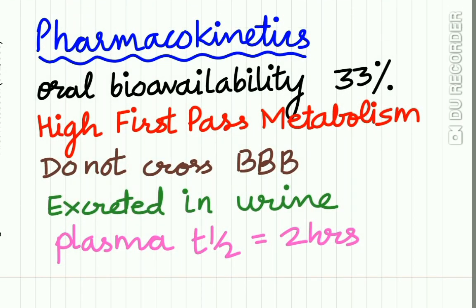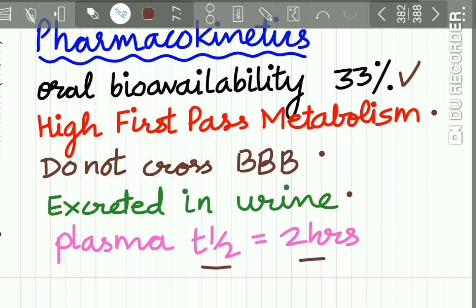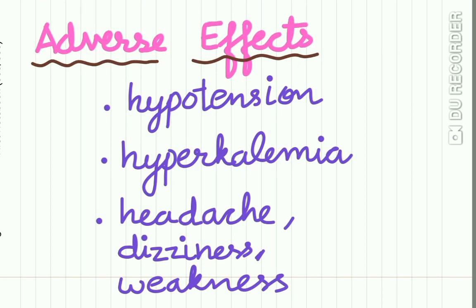Pharmacokinetics: oral bioavailability is 33%, there is high first-pass metabolism, it does not cross the blood-brain barrier, it is excreted in urine, and plasma half-life is 2 hours. Adverse effects include hypotension, hyperkalemia, headache, dizziness, and weakness.